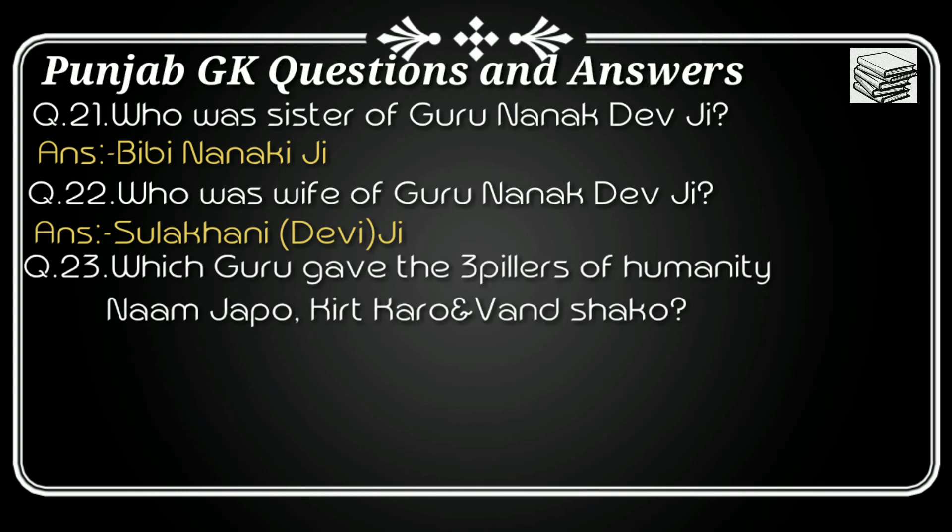Question number twenty three: Which Guru gave the three pillars of humanity — Naam Japo (meditate on God's name), Kirt Karo (earn an honest living), and Vand Chhako (share with others)? The answer is Guru Nanak Dev ji.